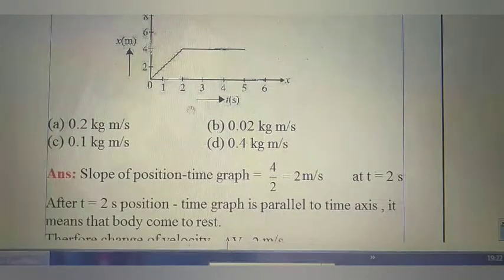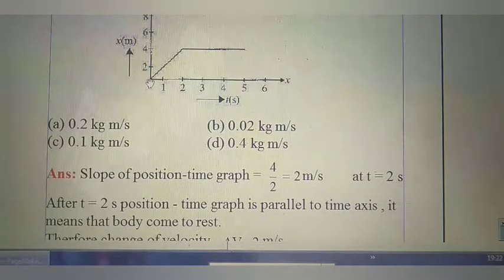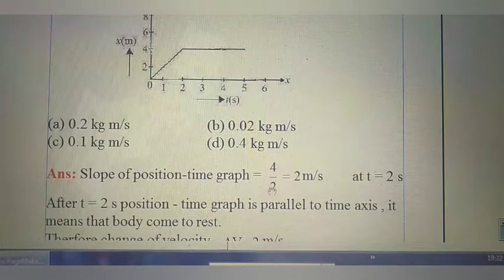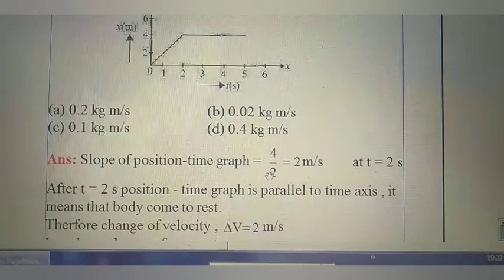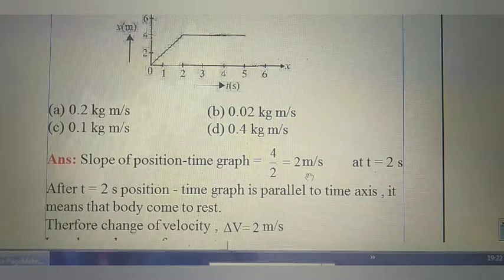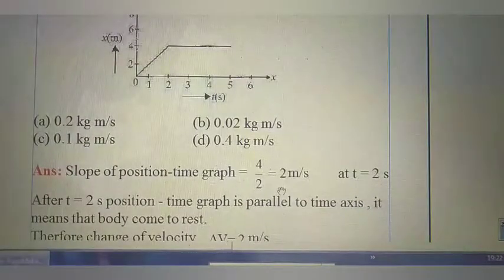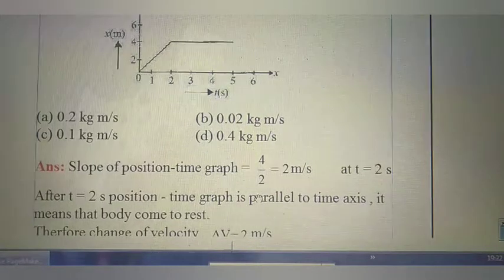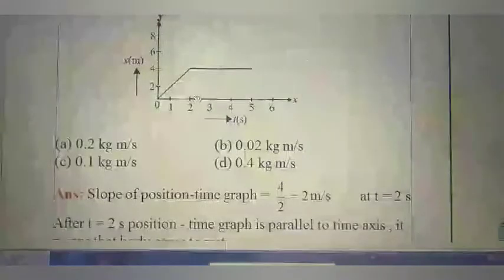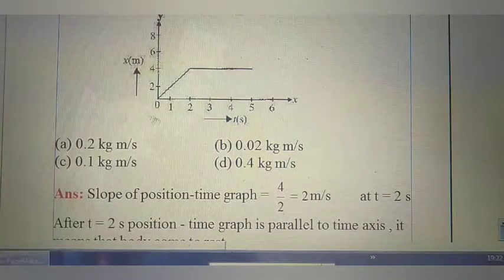The slope of the position-time graph equals perpendicular by base — perpendicular is 4, base is 2, that is 4 by 2. The slope of the position-time graph always gives the value of velocity. So the velocity obtained is 2 meters per second at t equal to 2 seconds.